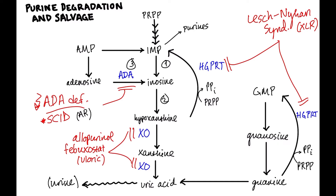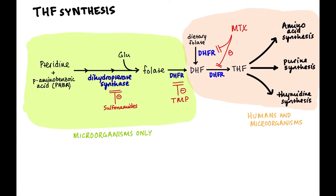That covers our purine degradation and salvage pathway. What you really need to hone in on is where the diseases are, what steps they involve, and the medications. As an aside, methotrexate involves dihydrofolate reductase. By blocking dihydrofolate reductase and reducing the amount of tetrahydrofolate, you reduce purine synthesis. Other drugs that reduce purine synthesis include sulfonamides and trimethoprim.